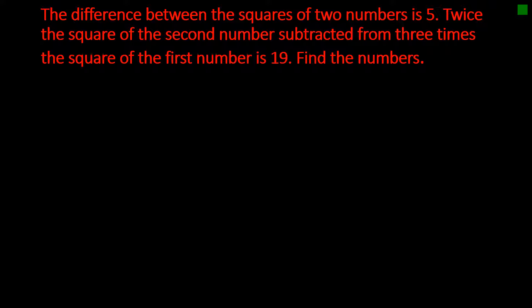So the difference between the squares of two numbers is 5. So if I have a number x and a number y and I square it and I take the difference, that result is 5. 2 times the square of the second number, subtracted from 3 times the square of the first number is 19. And let's find these numbers.